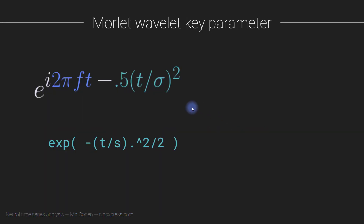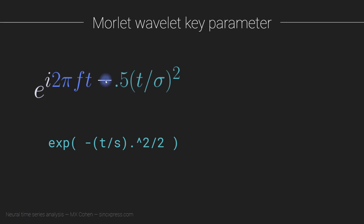Here we see the formula for a complex Morley Wavelet. Here is the sine part — e to the i, 2 pi f t — which is one of the parameters for the wavelet, the frequency of the sine wave. Previously, I've shown this as a complex sine wave multiplied by a Gaussian, but because the Gaussian is also e to the something, we have two terms with the same base multiplying each other, so we can just add the exponents.